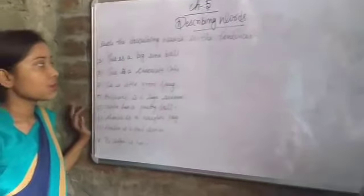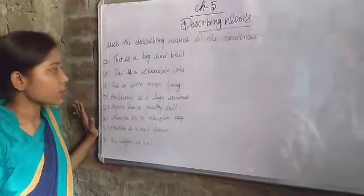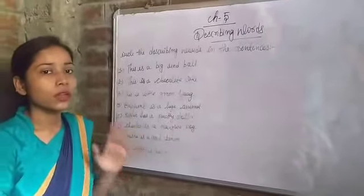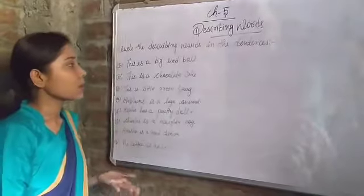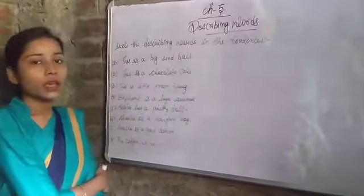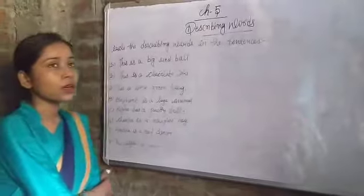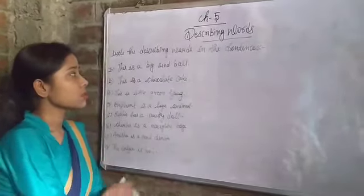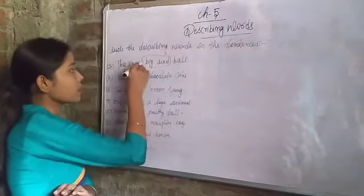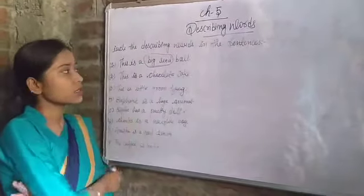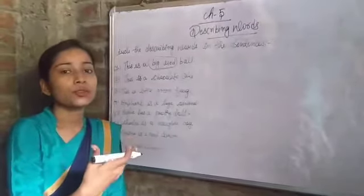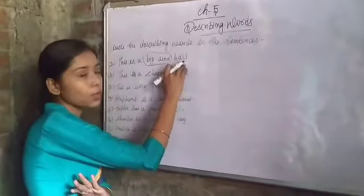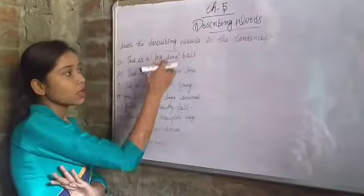In this sentence, we have to find out the describing word or adjective. This is a big red ball. First of all, we have to find out the naming word — the naming word here is ball. Ball is the main naming word in the sentence. Then what is the describing word in the sentence? Big, red — big red is the describing word, describing and telling about ball. So ball is the naming word and big red is the describing word.